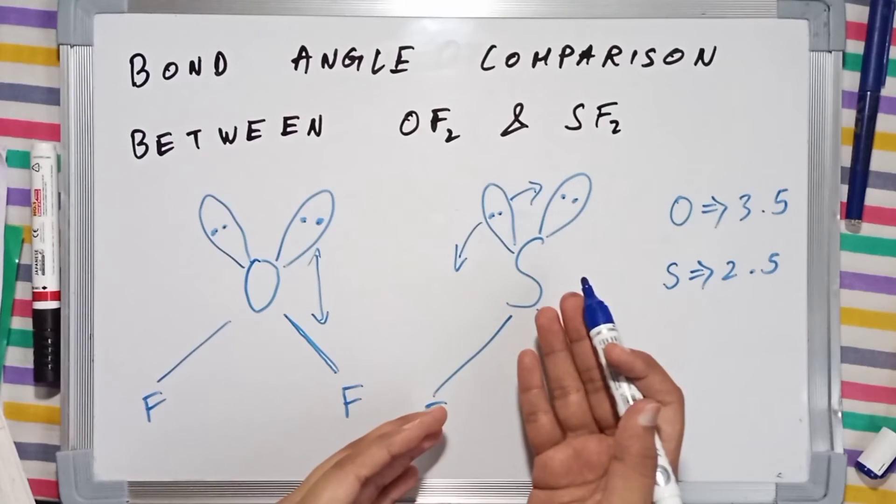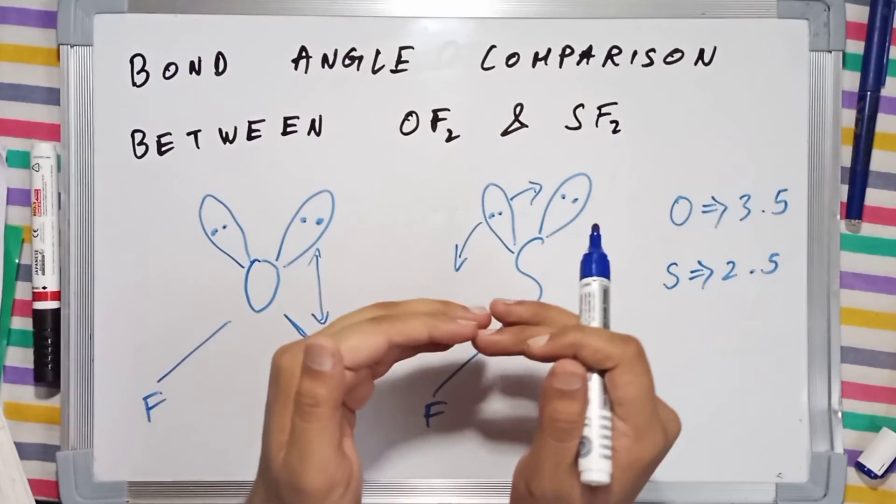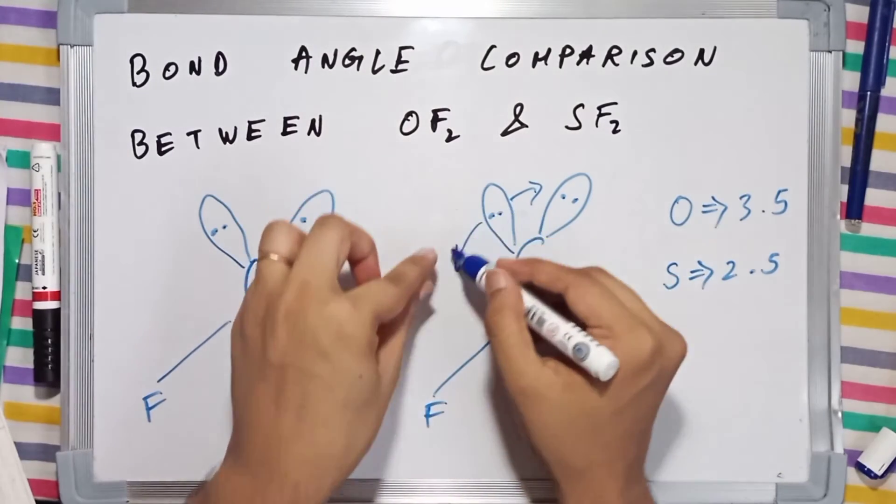is also made up of electrons which are negatively charged, and these are also electrons which are negatively charged. You know that like charges repel each other, so when this bond comes here